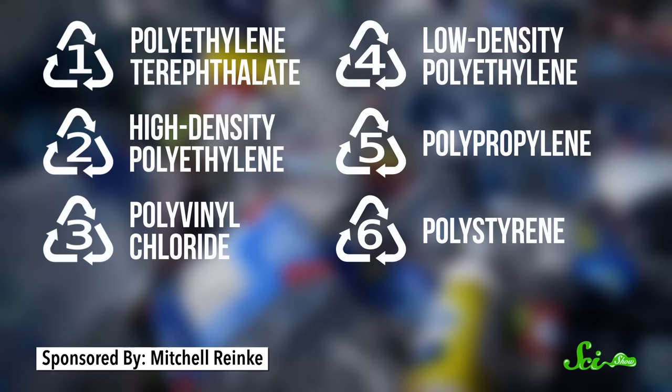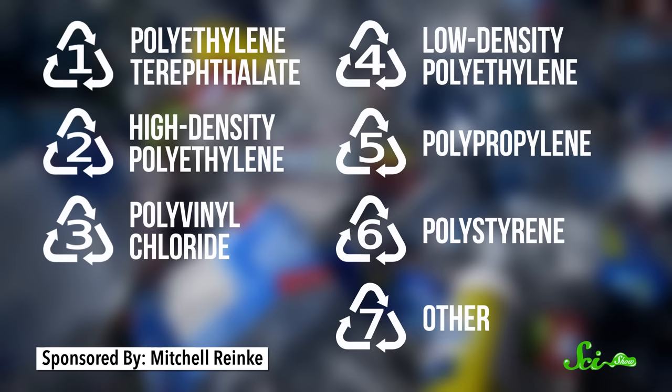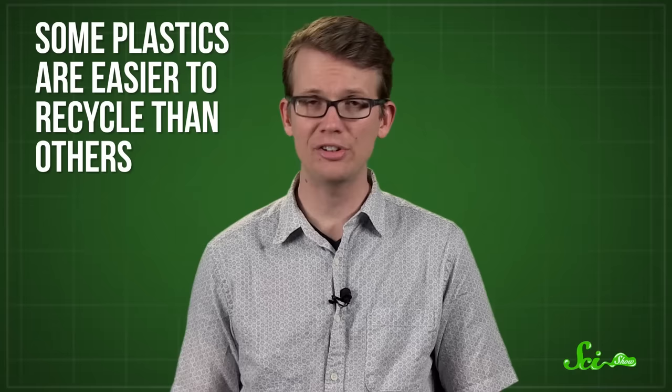So now all we have left is the plastic. Kinda. It turns out the plastics are made of one of six different types of chemicals, which correspond to the numbers one through six that you'll see on the bottom of that soda bottle or yogurt container. Sometimes you'll also see a seven, but that just means it's made of any one of the less popular types. Each kind of plastic has a different molecular structure, which determines the physical properties of the plastic. It also means that some plastics are a lot easier to recycle than others.